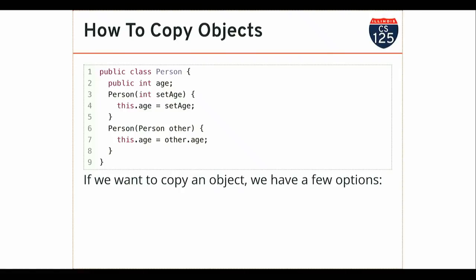This is not the easiest concept to wrap your mind around at first, but it's incredibly important. References show up over and over again — this is not something you learn about in CS 125 and never see again. You'll see references in computer science under a variety of different names: sometimes called pointers, sometimes references in languages like C++. Fundamentally it's the same idea. Copying references is easy — I just create a new reference variable and assign it the value of an existing one. That doesn't copy the object; it copies the reference. When I'm done, I have two references but just one object.